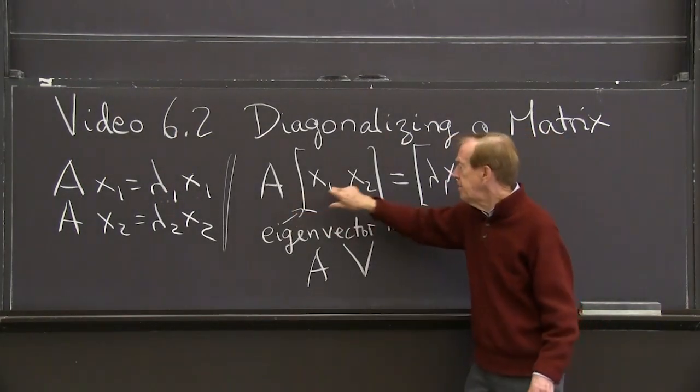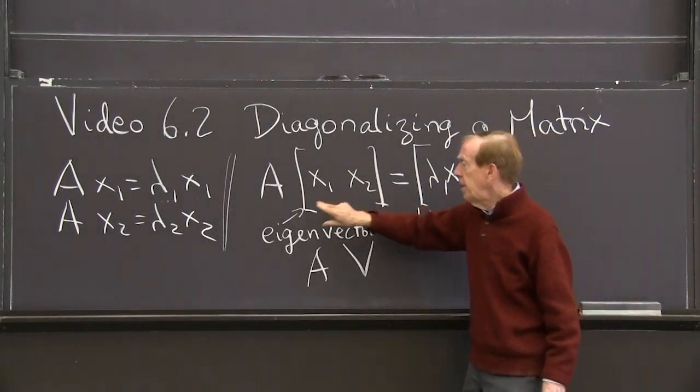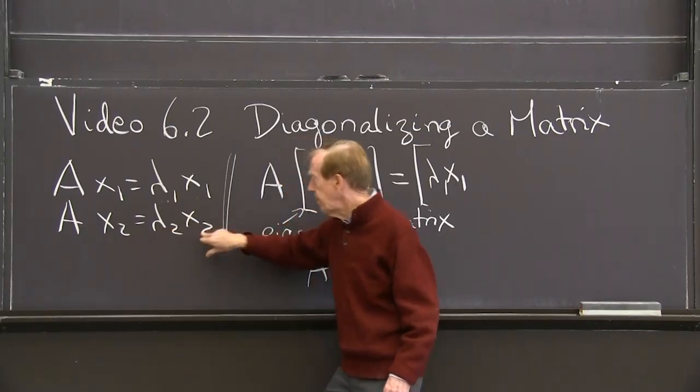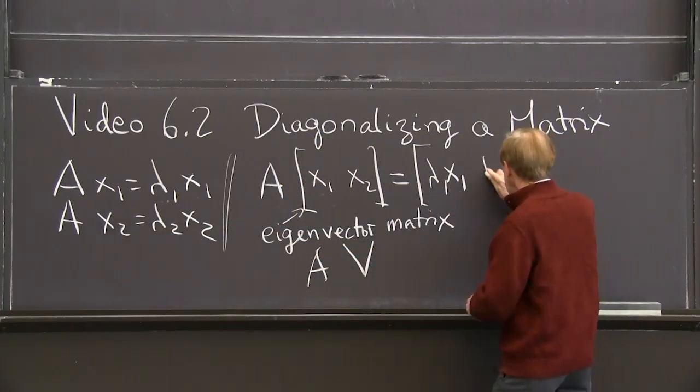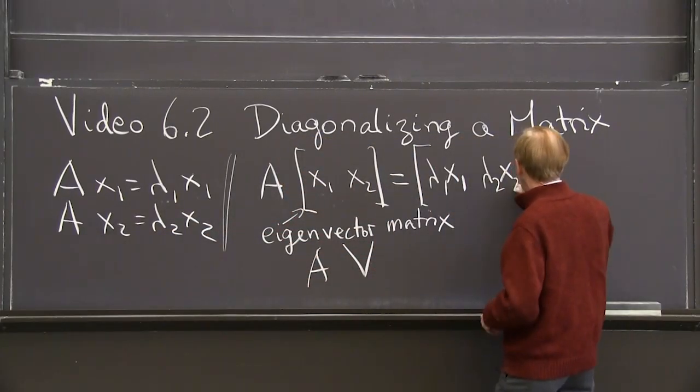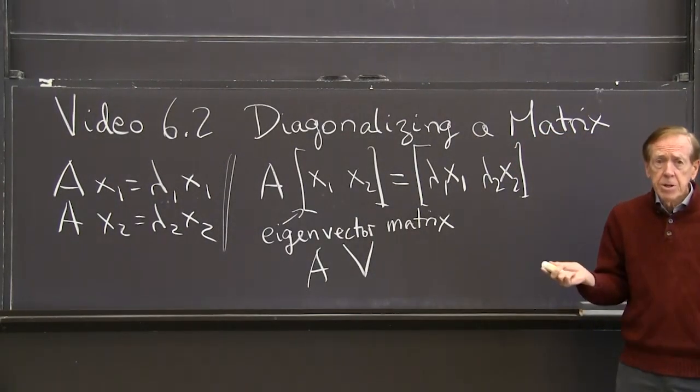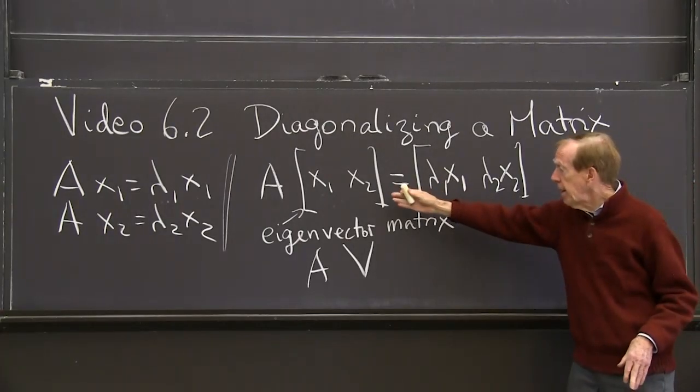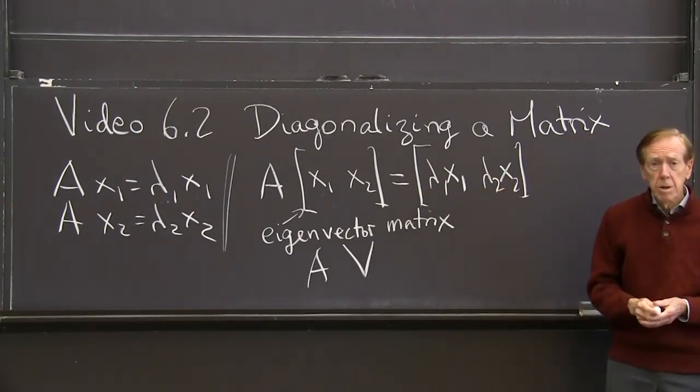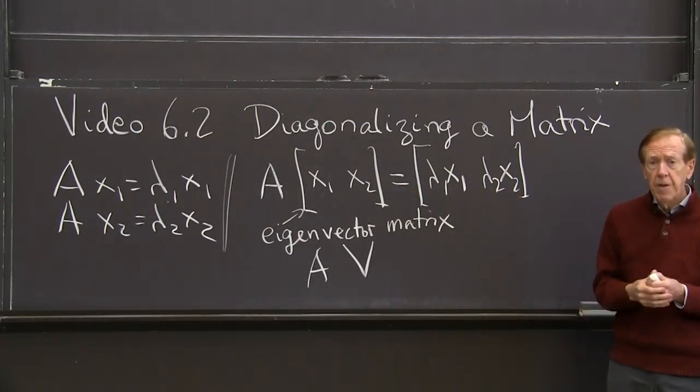And A times the second column is A x2, which is lambda 2 x2. So I'm seeing lambda 2 x2 in that column. OK? Matrix notation, those were the eigenvectors. This is the result of A times V.